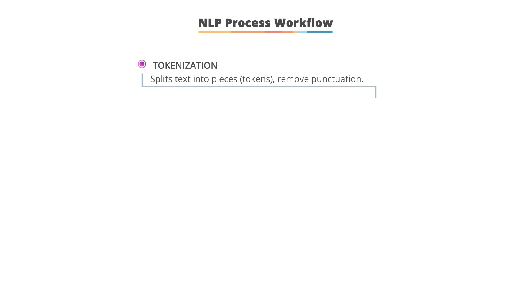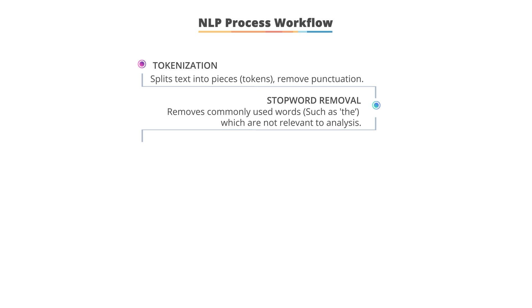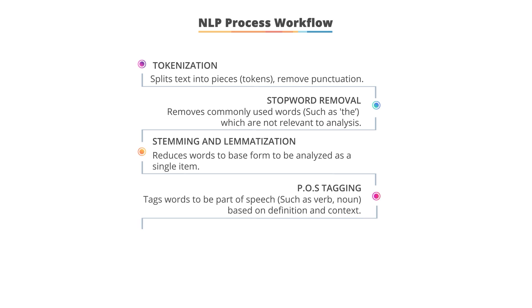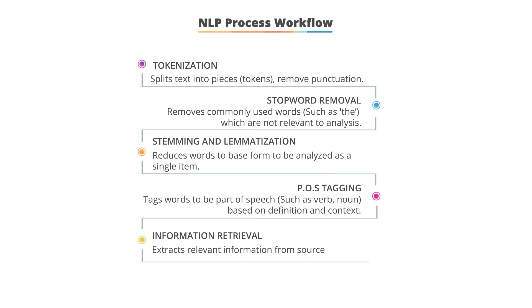The NLP process workflow has five steps. Step one: tokenization splits text into tokens or words and removes punctuation. Step two: stop word removal removes commonly used words like 'the', 'is', 'are'. Step three: stemming and lemmatization reduces words to base form. Step four: POS tagging tags words as noun, verb, adjective, etc. Step five: information retrieval extracts relevant information from the source.